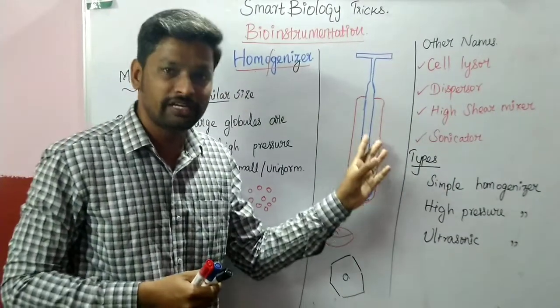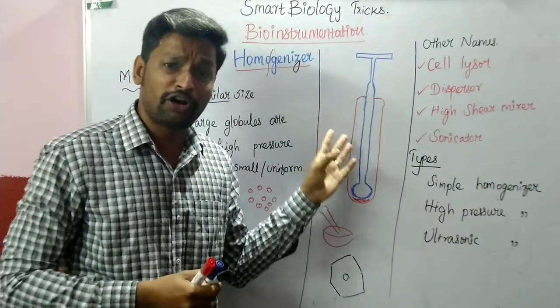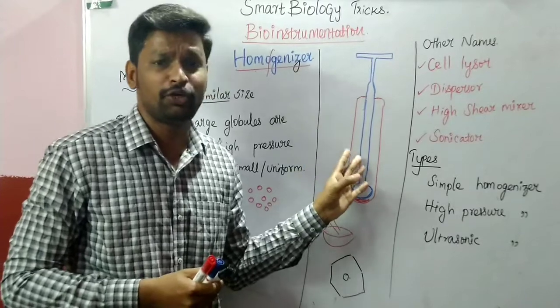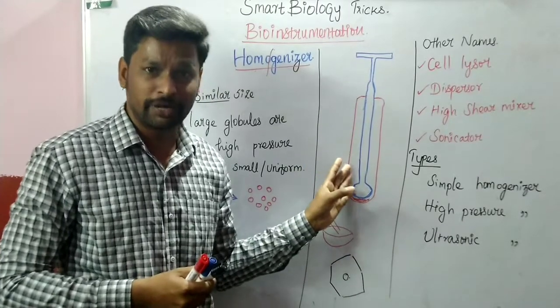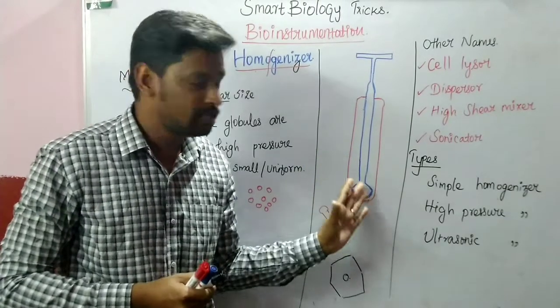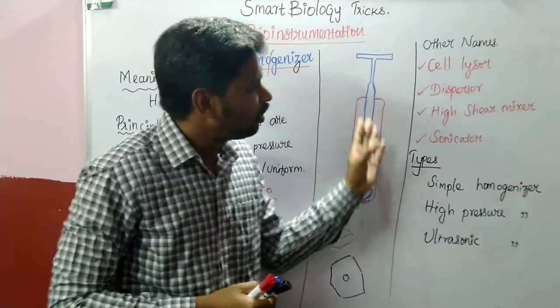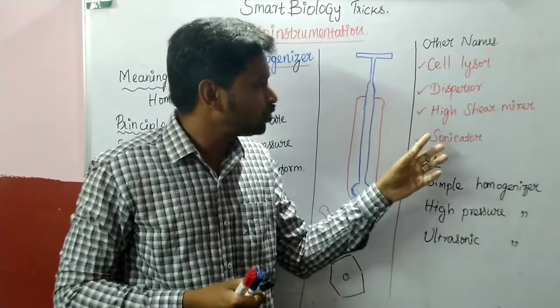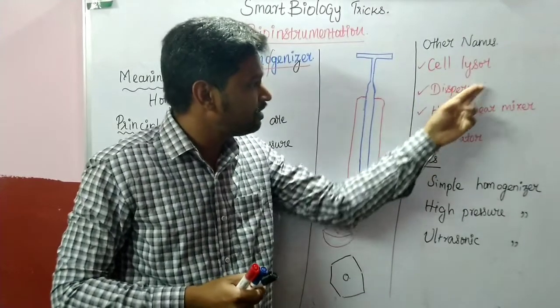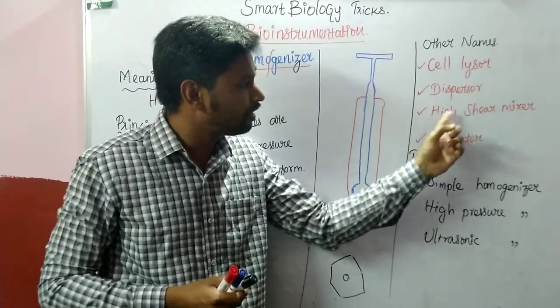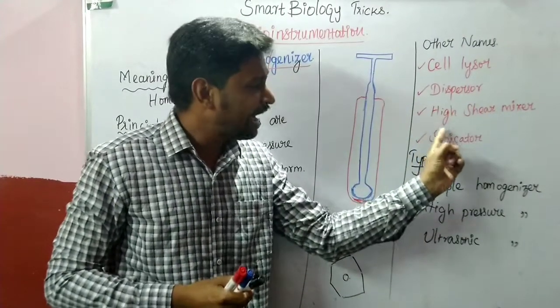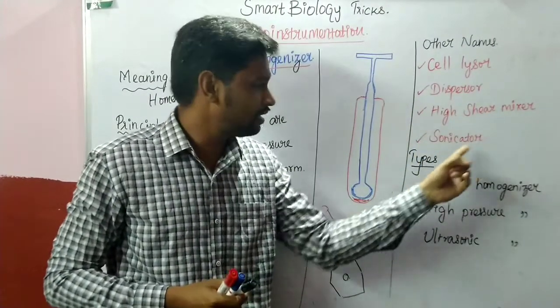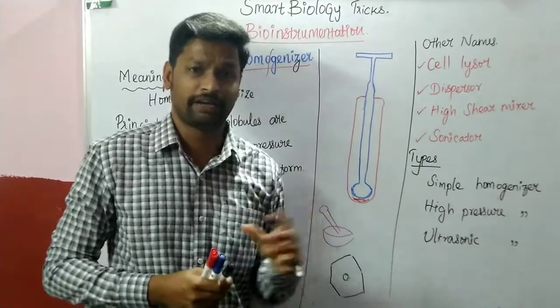The normal homogenizer is a basic laboratory equipment made up of glass. Advanced types of this instrument are also called cell lyser, disperser, high shear mixer, and sonicator.